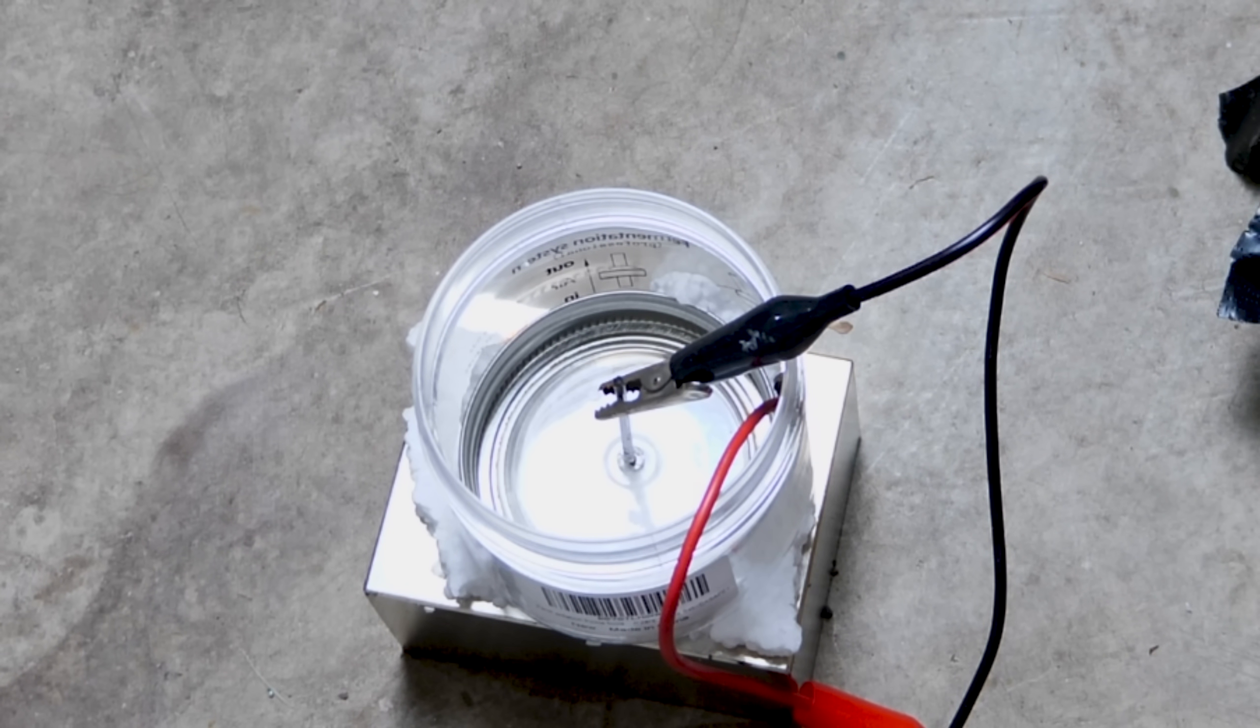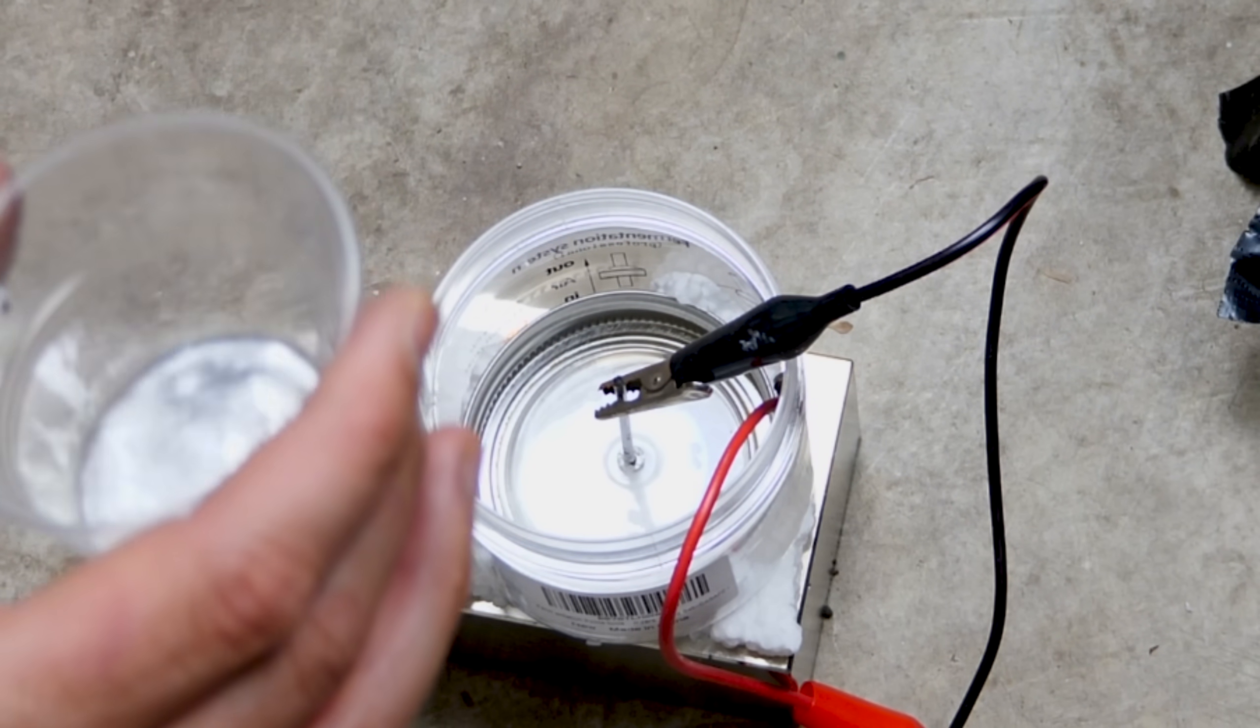And then I'm going to be using a nail for the inner electrode. And then in order to complete the circuit, I'm going to pour in liquid gallium.